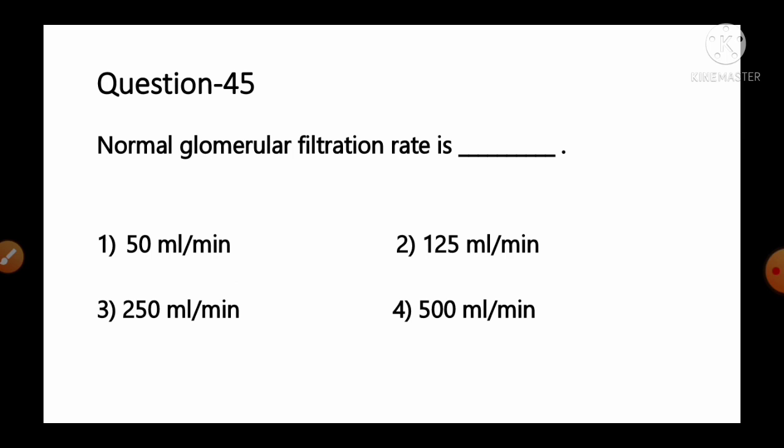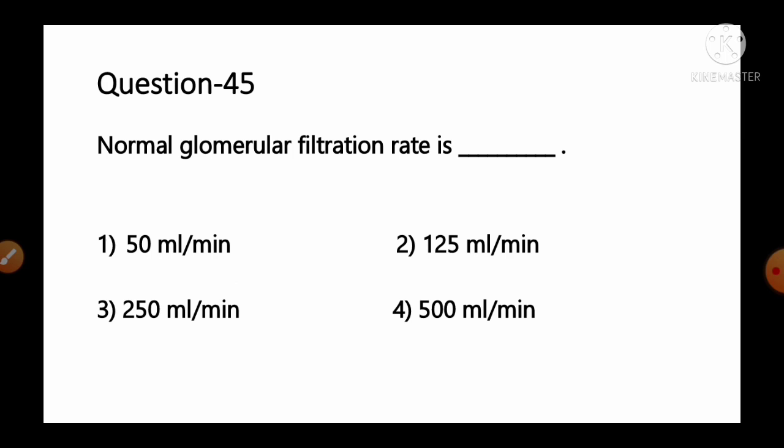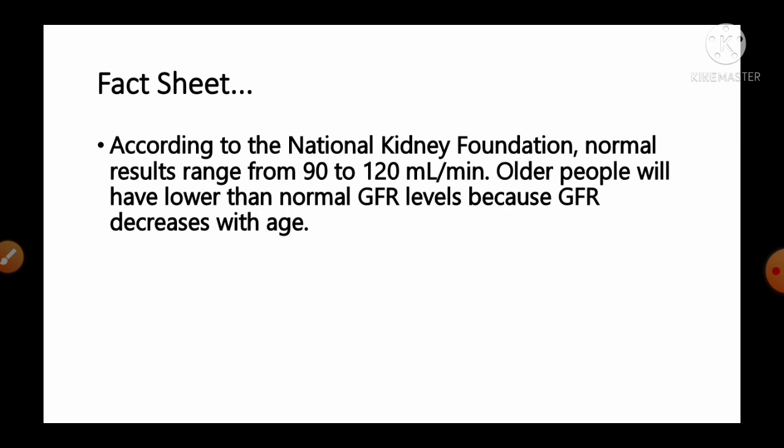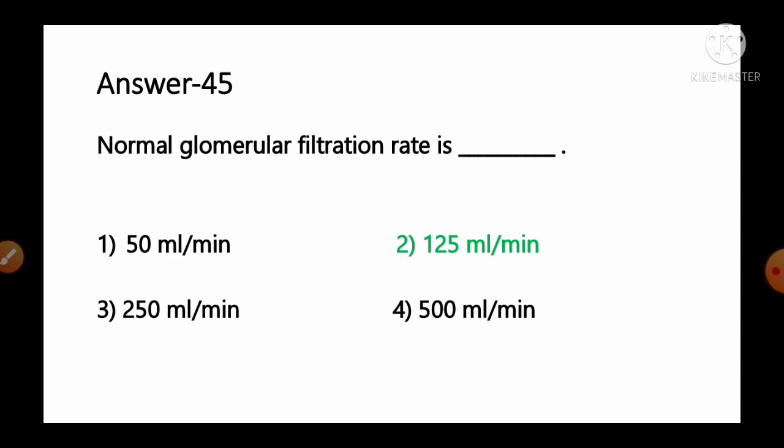Question number 45: Normal glomerular filtration rate is — options: 1) 50 ml/min, 2) 125 ml/min, 3) 250 ml/min, 4) 500 ml/min. According to the National Kidney Foundation, the normal GFR ranges from 90 to 120 ml per minute. Older people have lower GFR levels as GFR decreases with age. So option number 2, 125 ml per minute, is the correct answer.